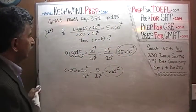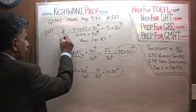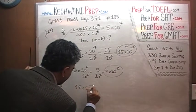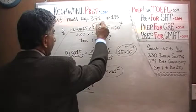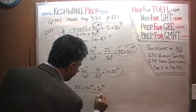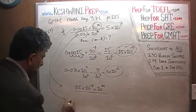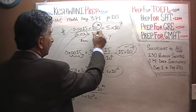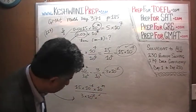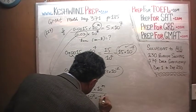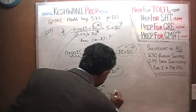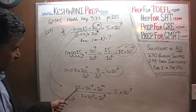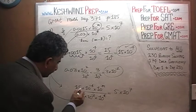So now we can substitute. On the top we have 0.0015, which equals 15 times 10 raised to negative 4, times 10 raised to M. On the bottom we have 0.03, which equals 3 times 10 raised to negative 2, times 10 raised to K. This entire quantity equals 5 times 10 raised to 7. We have our 15 and our 3 — divide top and bottom by 3, and 15 becomes 5.